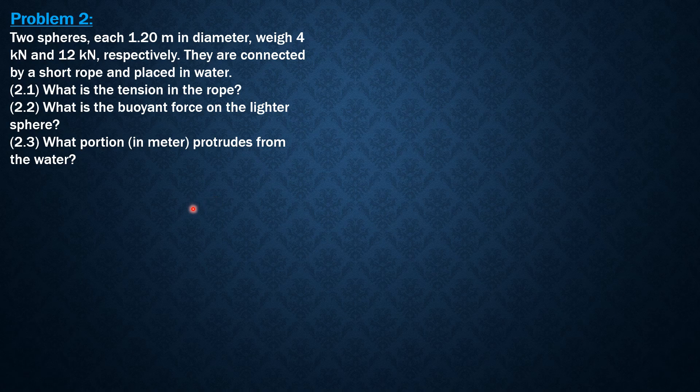So let's compute the buoyant force when the sphere is totally submerged. Buoyant force equals specific weight of water times volume of sphere, which is 4/3 π r³ and the radius is 0.6. Therefore, the buoyant force when the sphere is totally submerged is 8.876 kilonewtons.